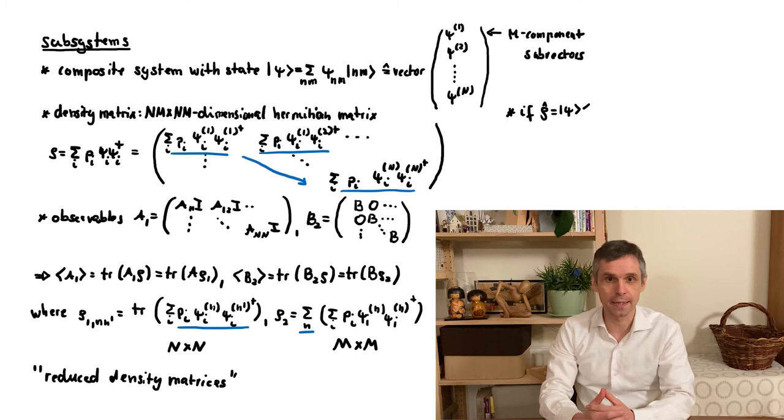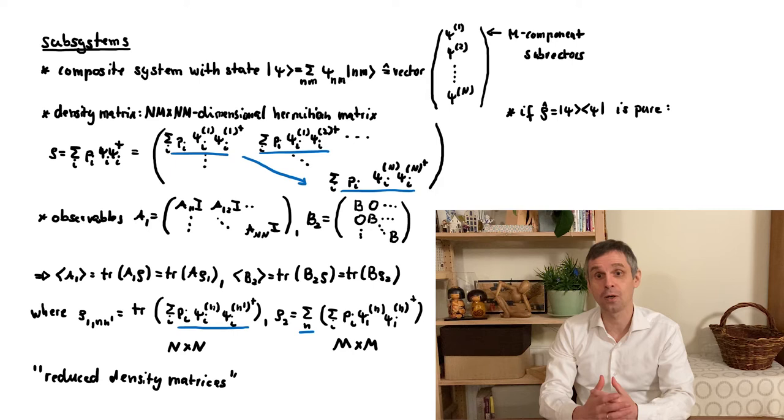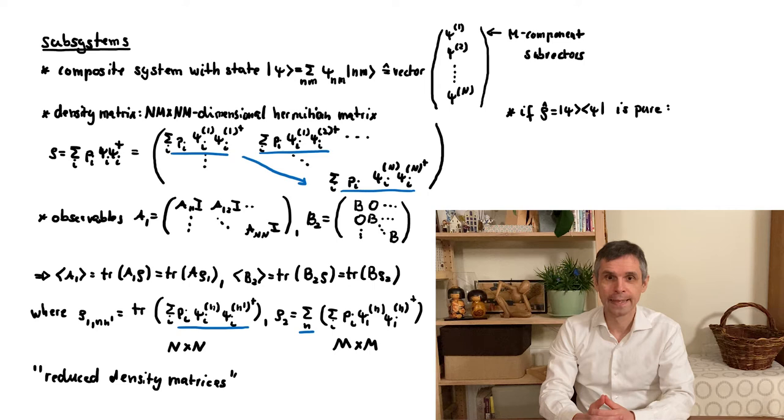To develop this we start from a composite system in a pure state and ask the question in which cases the reduced density matrices for the different parts are also pure. And this indeed has a very simple answer, namely this is exactly the case when the pure state separates, so that there is no entanglement between the part that we are interested in and its environment.